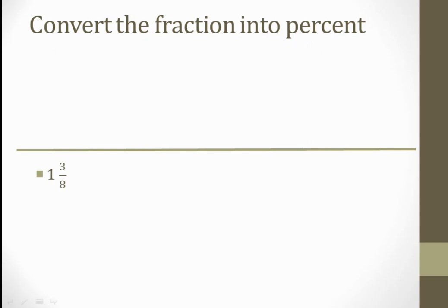Next question: convert the following fraction into percent. Here the fraction is given and we need to convert it into percent. Whenever we convert a fraction into percent, we multiply with 100 percent. So here 3 by 7 is multiplied with 100 percent. 3 times 100 is 300, so we get 300 over 7 percent.